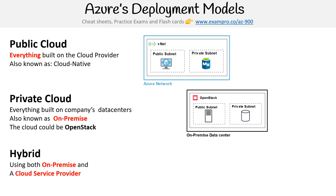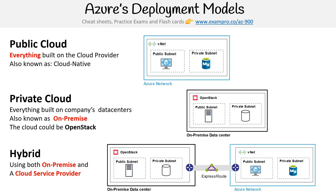The last on our list is hybrid. With hybrid, you're using both on-premise and the cloud service provider, and they're connected together. There are a lot of different networking services you can use to facilitate that connection. In this case, we're using ExpressRoute, which is a dedicated connection — it's like having a fiber optic line running from your on-premise data center to the Azure network. So just one of the ways you can connect.